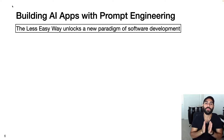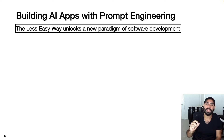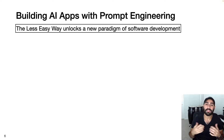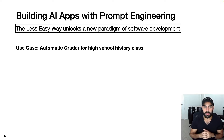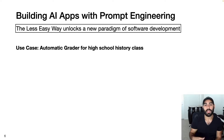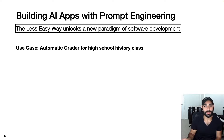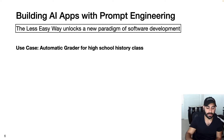That brings us to building AI apps with prompt engineering. The less easy way unlocks a new paradigm of software development. To demonstrate this, let's look at a specific use case: suppose we wanted to make an automatic grader for a high school history class. This is easy enough for multiple choice or true-false questions, but becomes more difficult when the answers are short-form or long-form text responses.